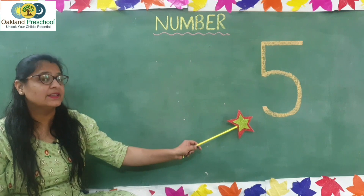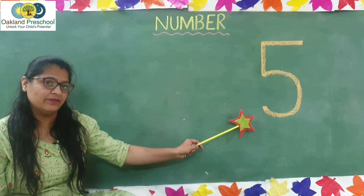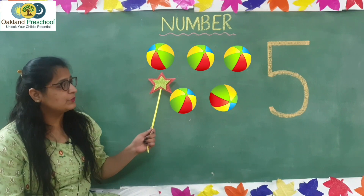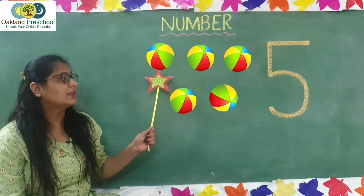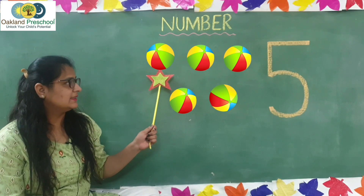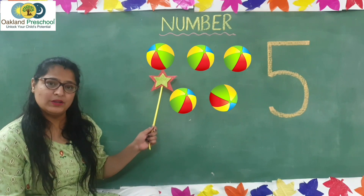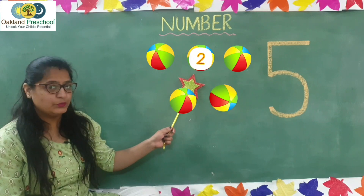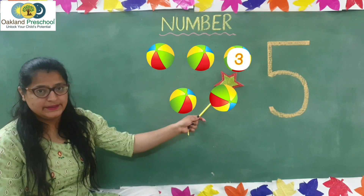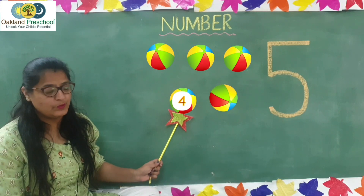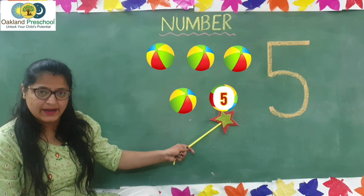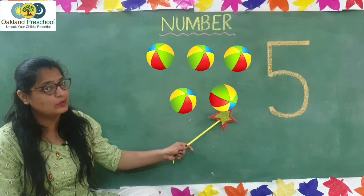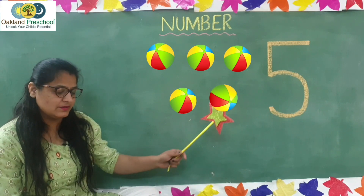Which number is this? Number 5! Kids, what do you see here? These are balls. How many balls are there? Let's count: 1, 2, 3, 4, 5. There are 5 balls.